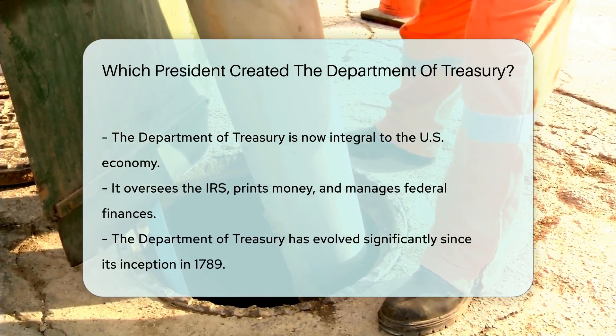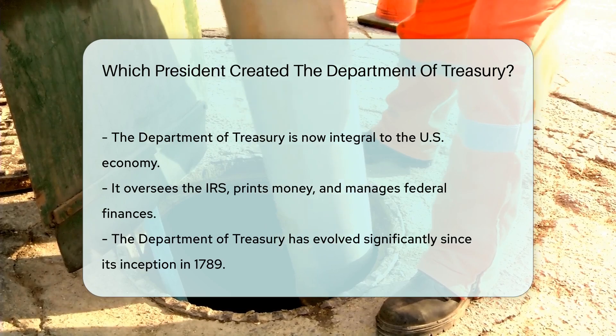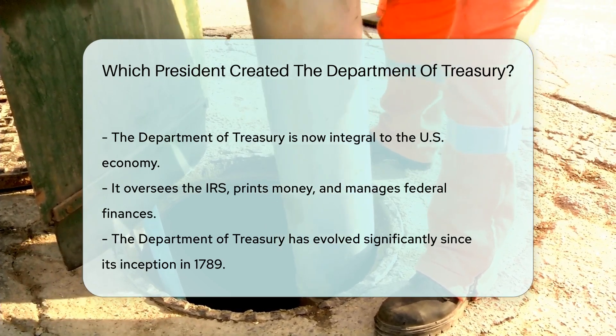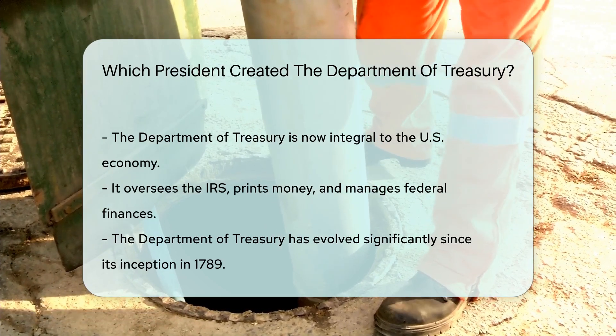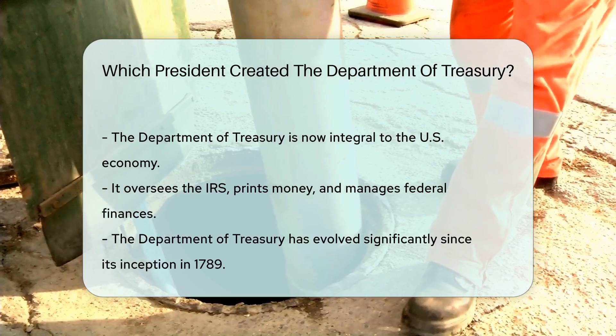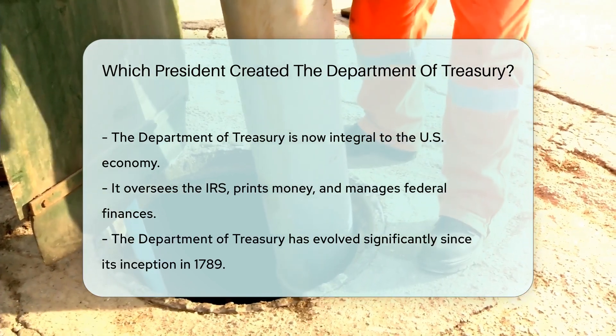The Department of Treasury has come a long way since 1789. Today, it's a key player in the U.S. economy. It oversees the IRS, prints money, and manages federal finances.